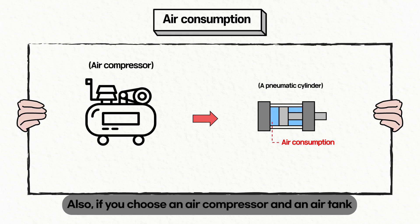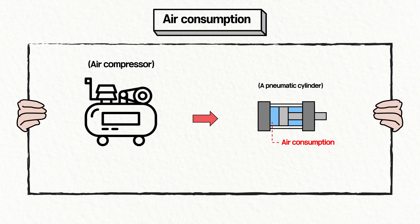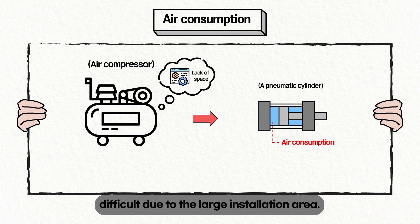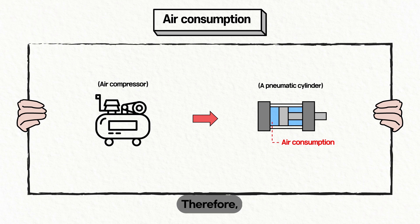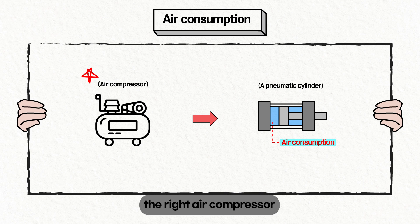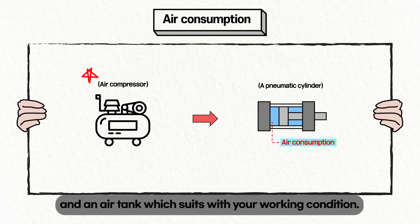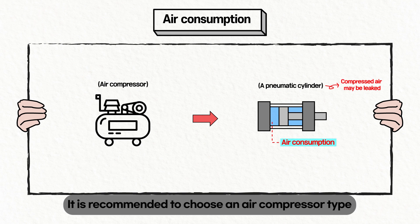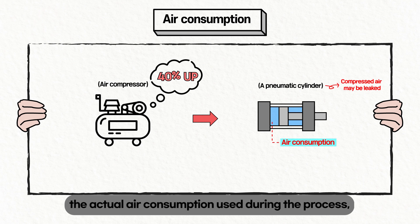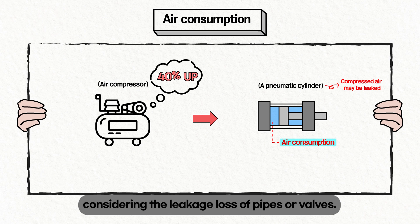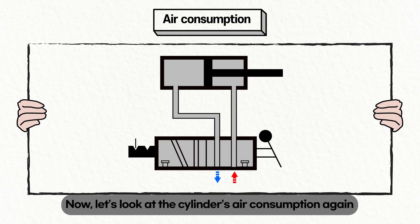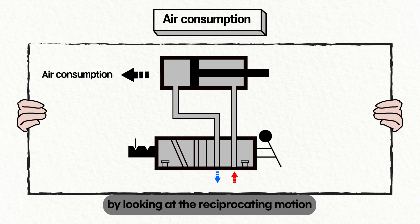Also, if you choose an air compressor and air tank that is much bigger compared to the amount of compressed air the cylinder uses, maintenance and management may be difficult due to the large installation area. Therefore, knowing the amount of compressed air your pneumatic cylinder uses helps you choose the right air compressor and tank. It is recommended to choose an air compressor about 40% larger than the actual air consumption, considering leakage loss from pipes or valves.